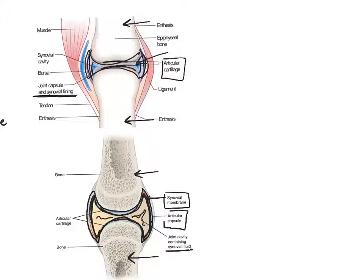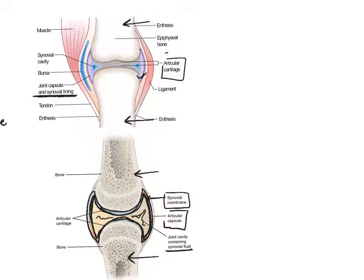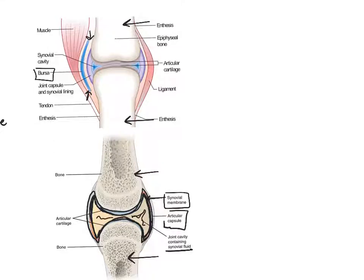Another structure to be familiar with is the bursa. The bursa is an additional layer of protection within the joint — it's kind of a fluid-filled pillow of cartilage that provides extra cushioning and protects the joint in various areas.